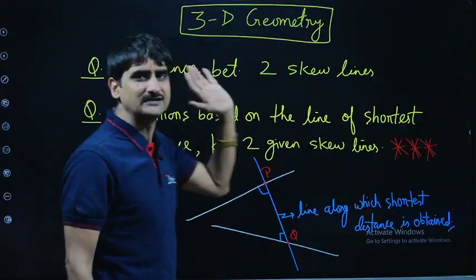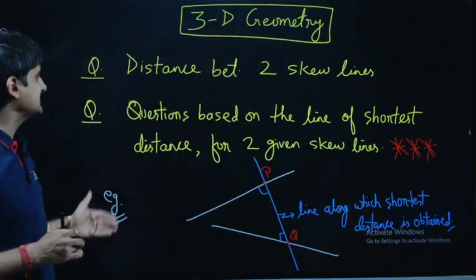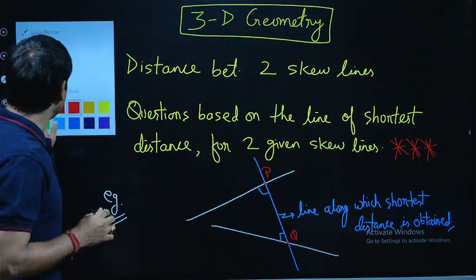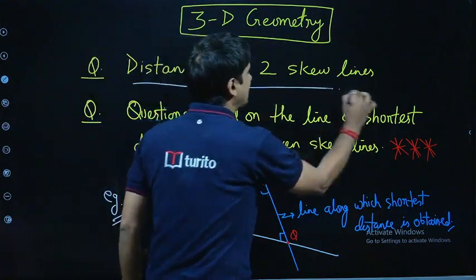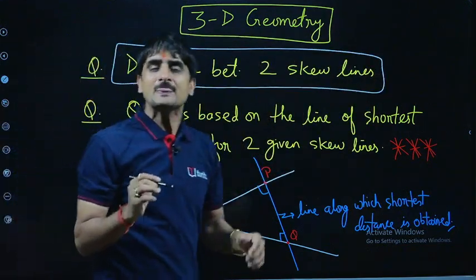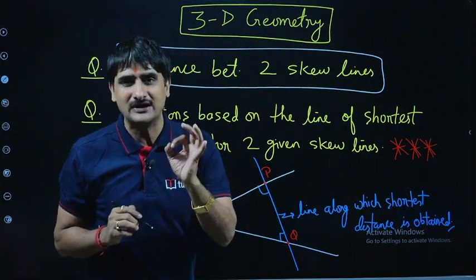For today we'll be discussing 3D geometry. In the 3D geometry chapter, here's the list of which type of questions you may expect in your JEE Mains. It's distance between two skew lines, which is a direct formula-based question, and you should be able to solve it if it comes in front of you in your examination.